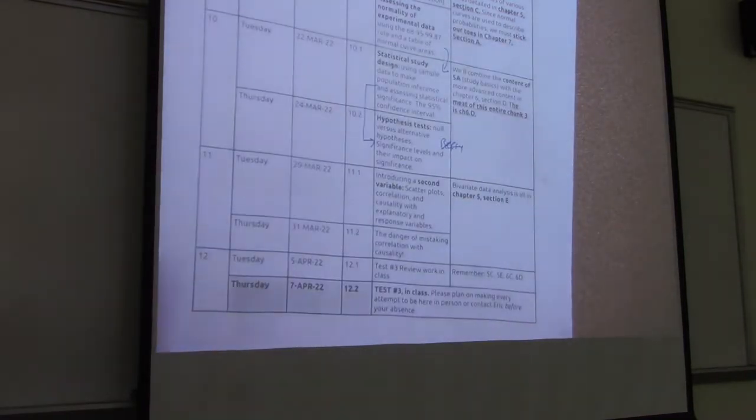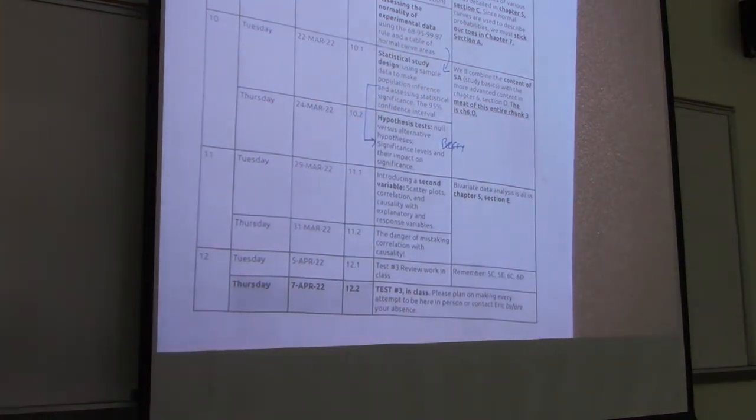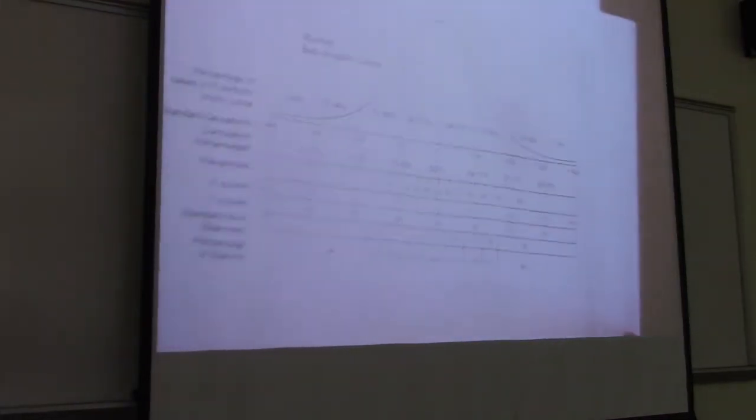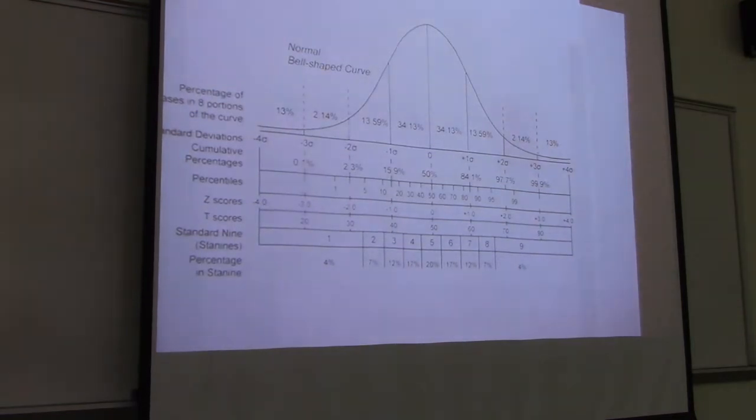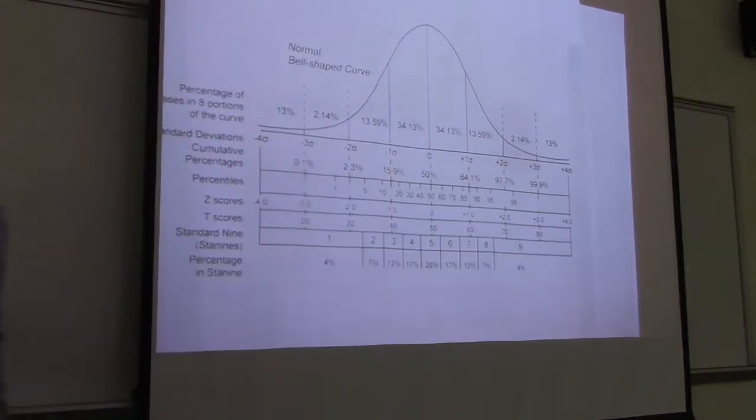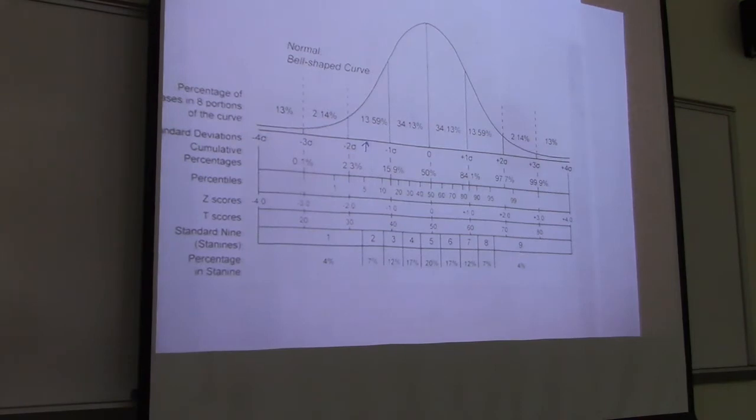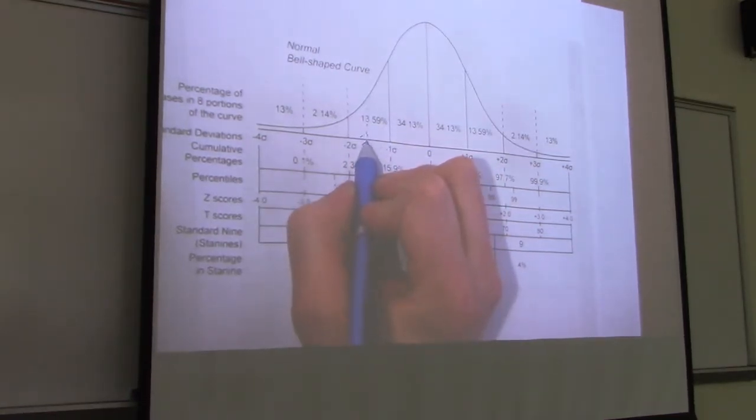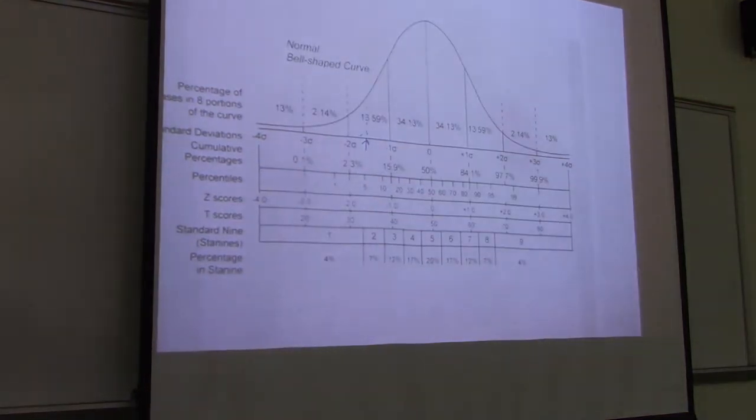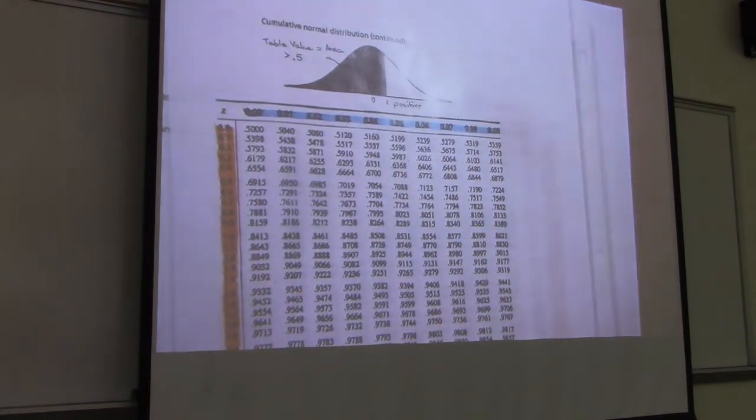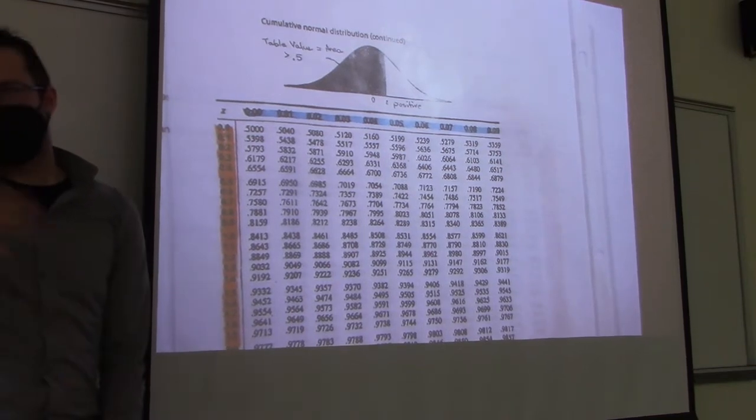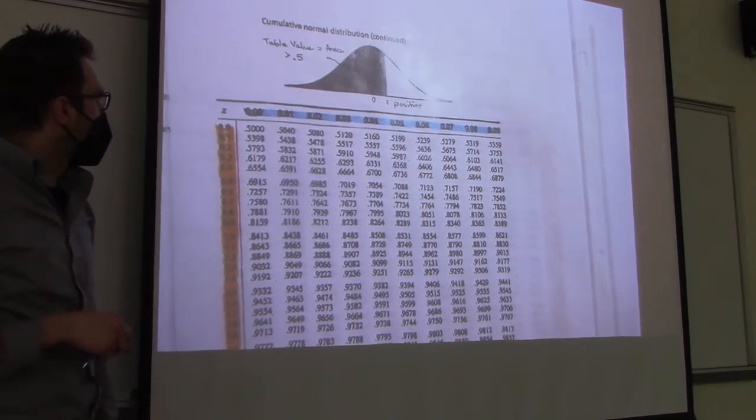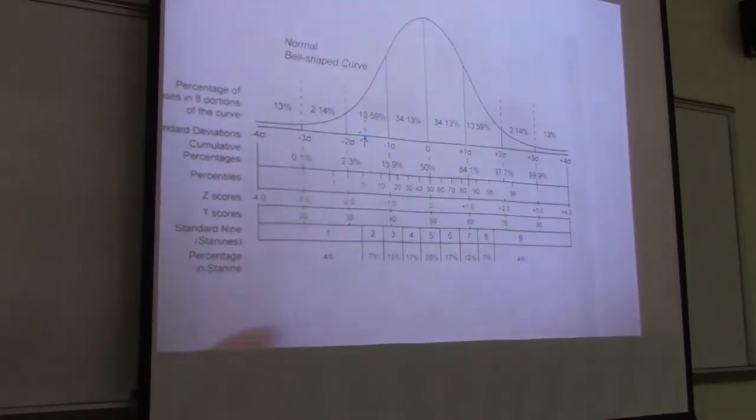Our plan today is to pick up the Thursday content, which is understanding with an even higher level of detail how we can use the breakdown of the normal curve to make inferences. What we want to be able to do today is say, using a fancy table, what percent of values would we expect an observation that falls here to be above or below? And to do that we're going to use what sometimes seems a little bit overwhelming, the normal distribution scale table. But we want to make friends with this table because we didn't make friends with it on Thursday.